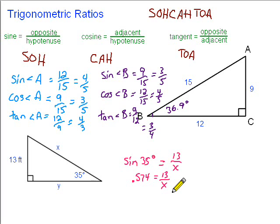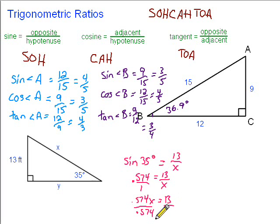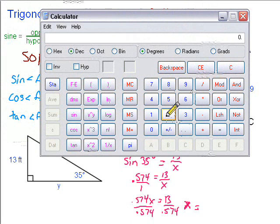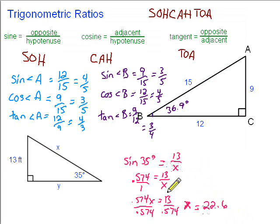So 0.574 equals 13 over X. We can solve this using algebra — taking cross products, we get 0.574X equals 13. Divide both sides by 0.574, and we end up with X equals 13 divided by 0.574, which gives us 22.64. Rounding to the nearest tenth, that would be 22.6. So side X in this triangle is going to be 22.6 feet.